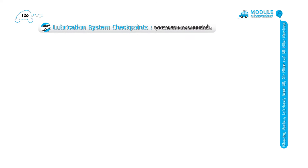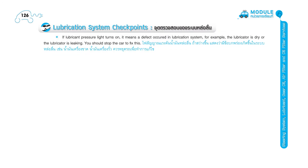Lubrication system checkpoints. 4. If the lubricant pressure light turns on, it means a defect occurred in the lubrication system — for example, the lubricator is dry or the lubricator is leaking. You should stop the car to fix this.